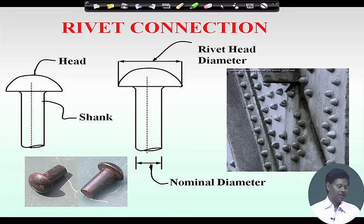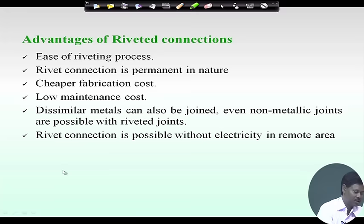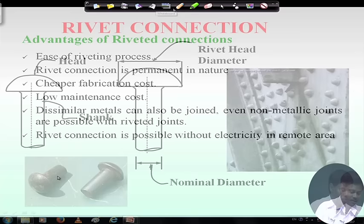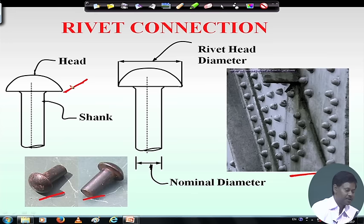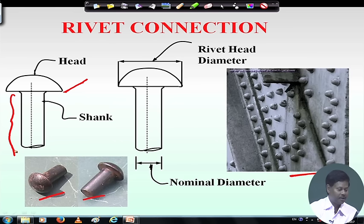Coming to rivet connection — rivets are inserted in the plates to join them together, and by applying heat we can insert the rivet. A typical rivet joint shows different members connected to a plate by riveting. In the parts of a rivet, there is the head and the shank. The shank has a particular length depending on the thickness of the plates, and different types of heads are available giving different names to the rivets.